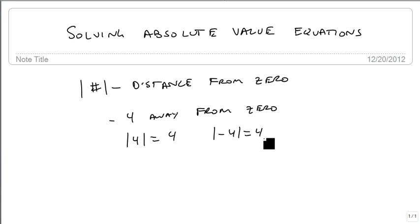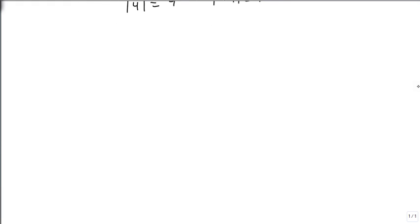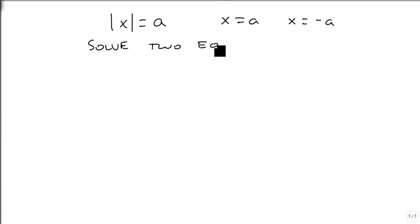So while the absolute value is a function, reversing the process is not - we end up with two answers instead of one. The basic rule is, if I have the absolute value of some variable phrase equal to some number a, then x equals a and x equals minus a. The real key here is to know that you're always going to solve two equations. This is the fundamental piece of solving absolute values that's important.